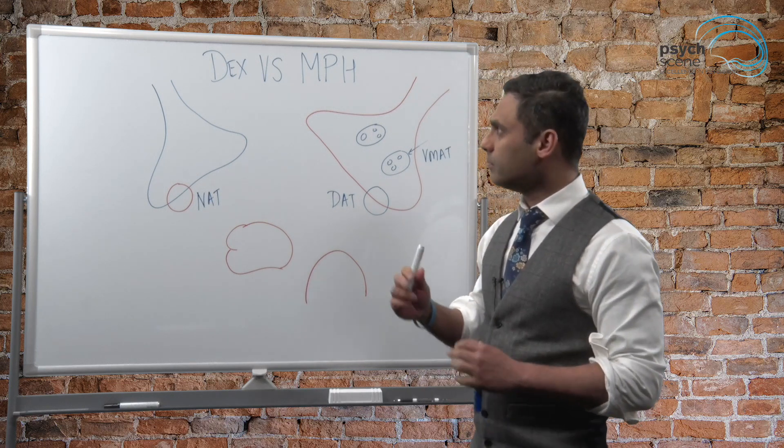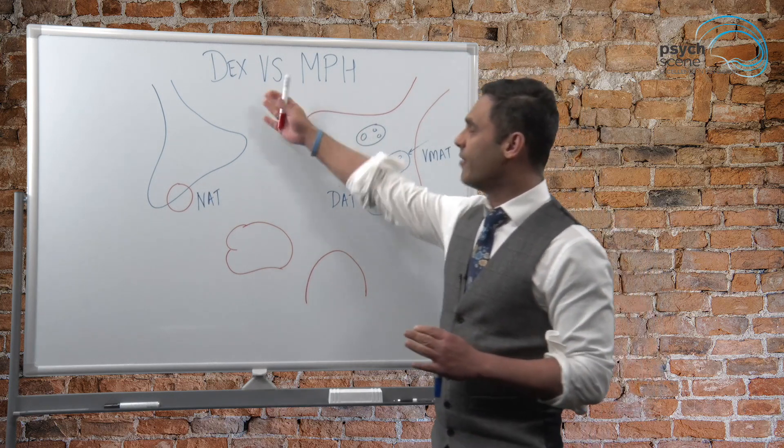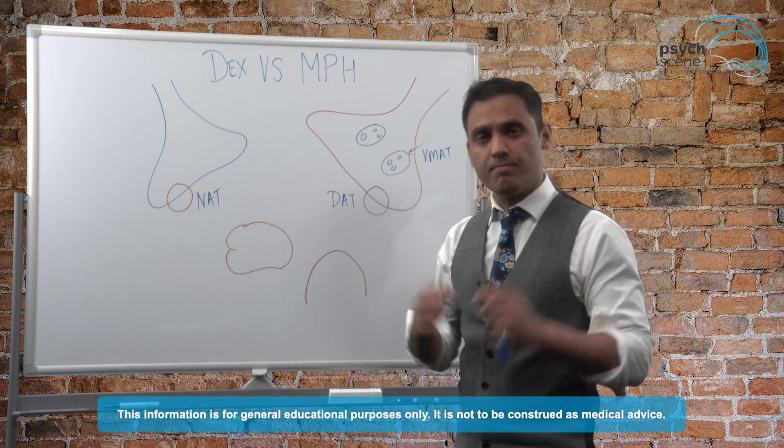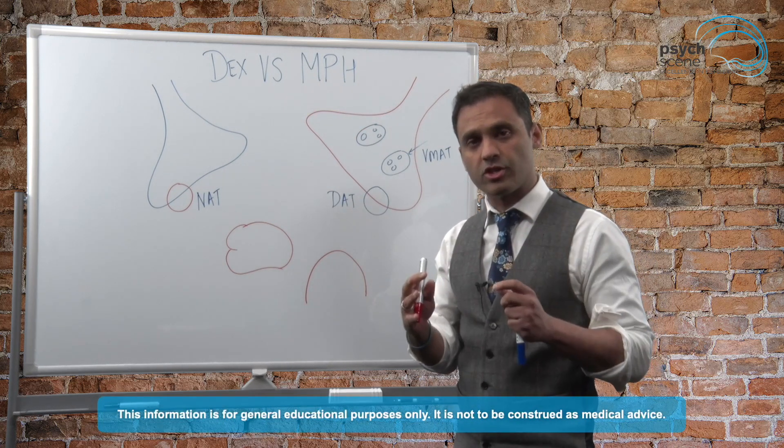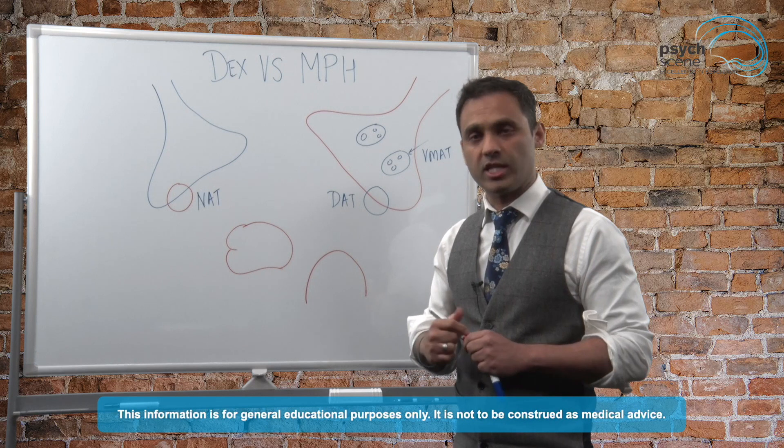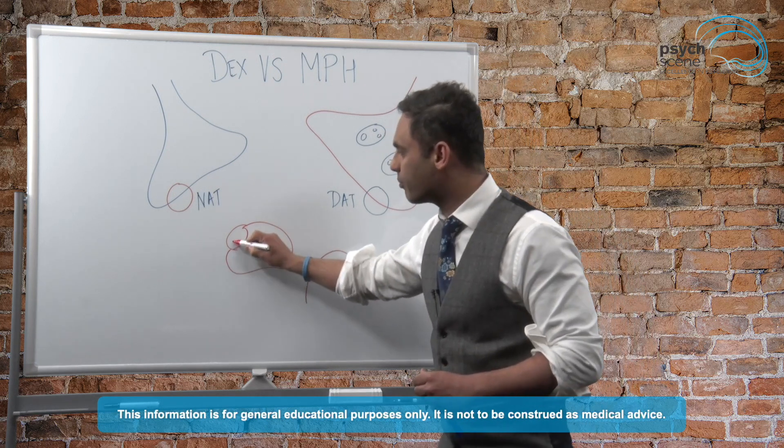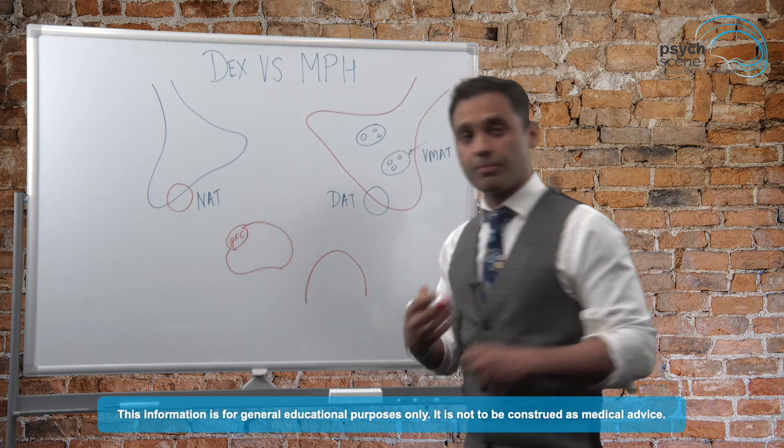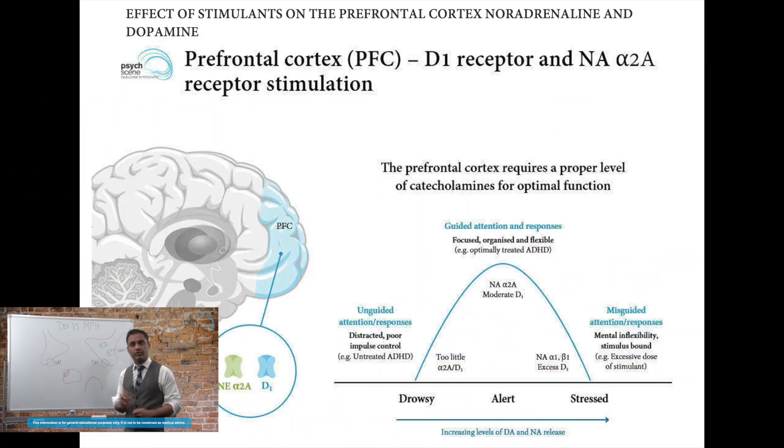Now when we think about amphetamine versus methylphenidate, the main thing that both of these agents are doing to assist in ADHD is this focus here on the prefrontal cortex because the prefrontal cortex is really the seat of cognition, attention, concentration, focus, set shifting, all of those things that can be affected in ADHD organization.